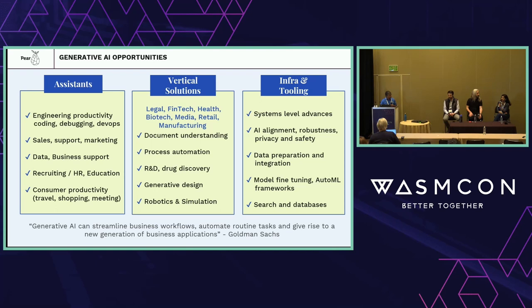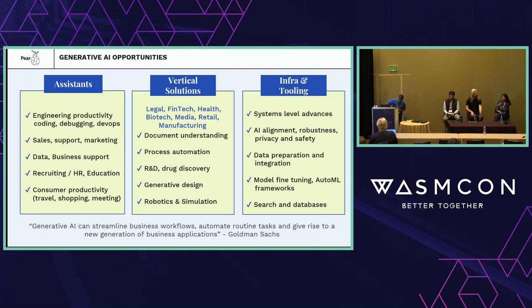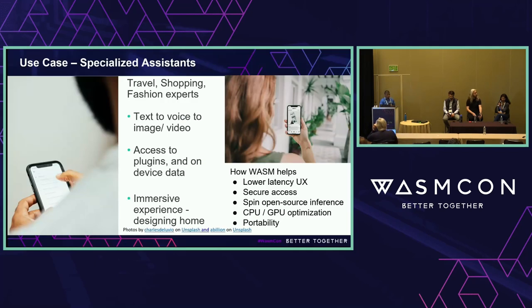We want to talk about use cases. Generative AI is a horizontal technology — we believe it's going to transform many different businesses and verticals. Legal, fintech, health, biotech, media, retail, manufacturing — anything that requires document understanding or process automation — also generative design, drug discovery, robotics, simulation. There's also a lot of potential in infrastructure and tooling. We're going to focus on the category of assistance: engineering and all engineering processes, data analytics, and personal assistance. Let's look at this specific use case and how Wasm could help.